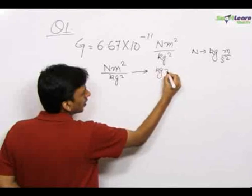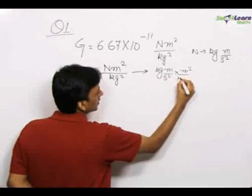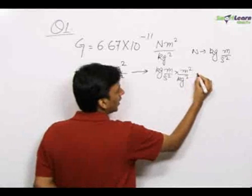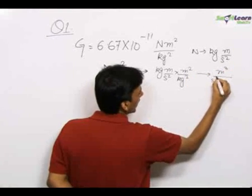So we feed in here, this is equivalent to kg meters per second square into meter square upon kg square. This is equivalent to meter cube upon second square kg.